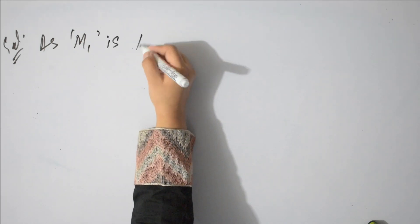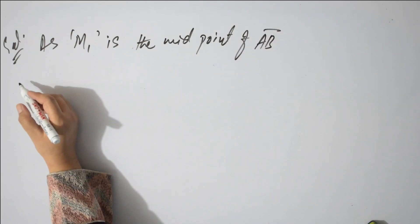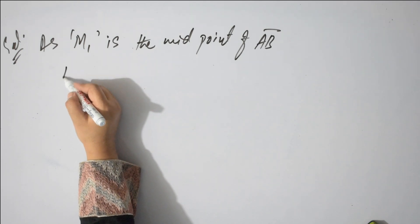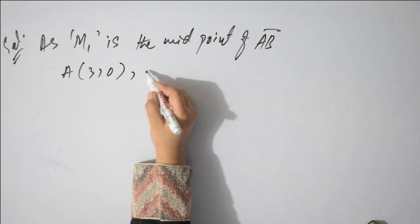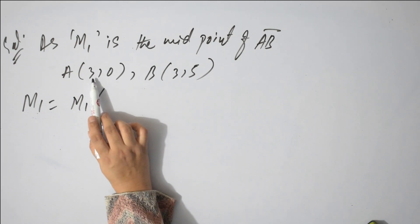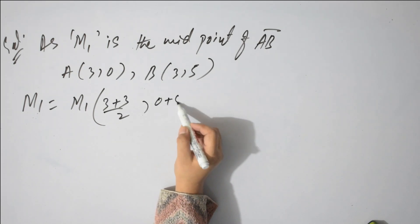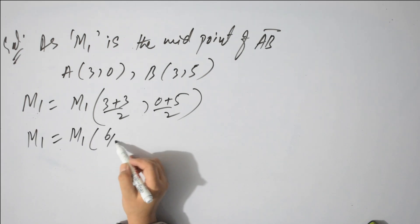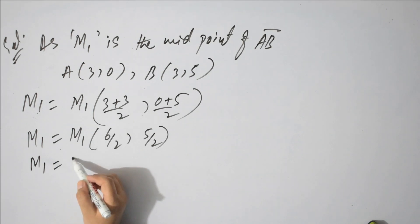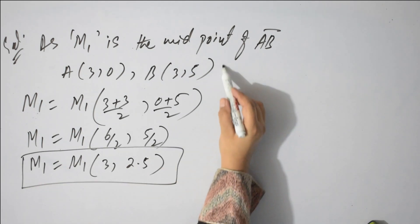Solution: As M1 is the midpoint of AB, coordinates of A (3,0) and B (3,5). M1 = ((3+3)/2, (0+5)/2) = (6/2, 5/2) = (3, 2.5). So this is your M1.